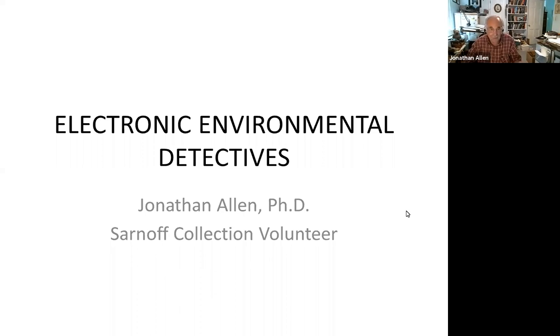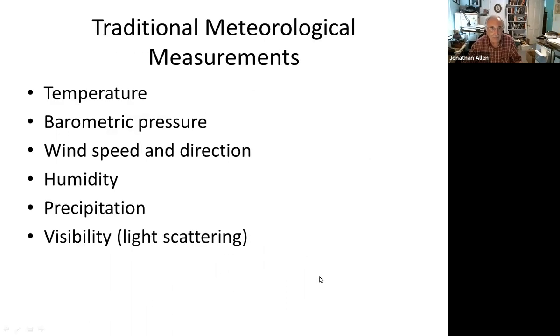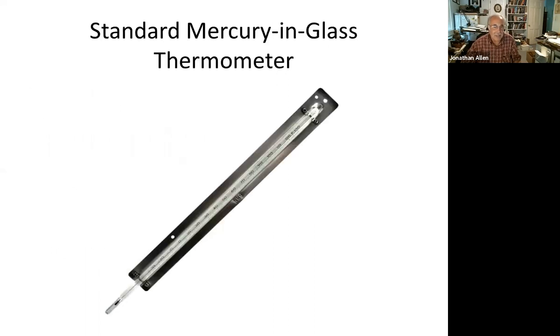The traditional instruments for measuring the traditional measurements that are necessary for meteorology go back to temperature, barometric pressure, wind speed and direction, humidity, precipitation, and visibility, which is how far you can see in spite of light scattering. Now let's look at some of these. The standard mercury and glass thermometer, I'm sure you're all familiar with. We all have them around the house, although these days they don't usually contain real mercury.